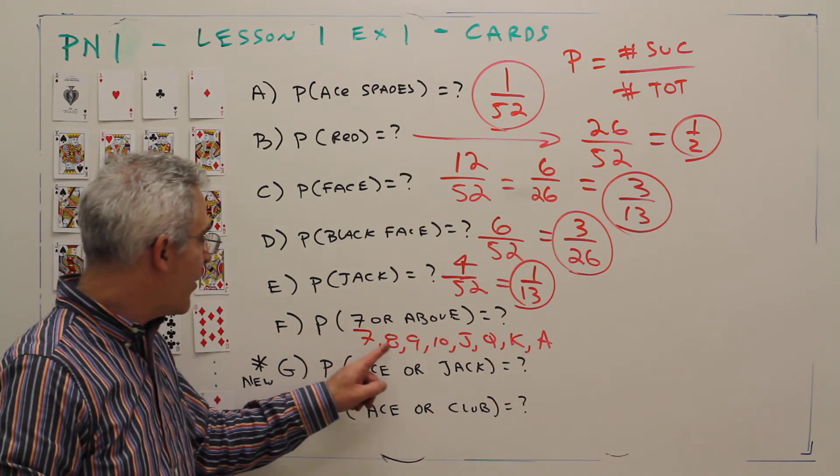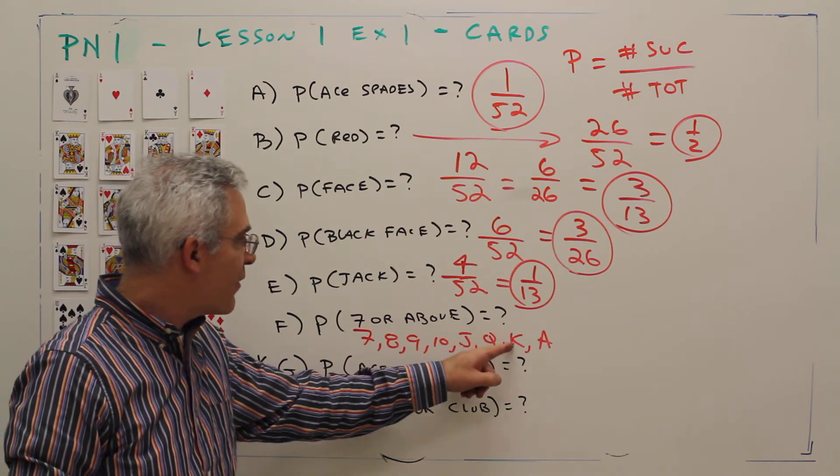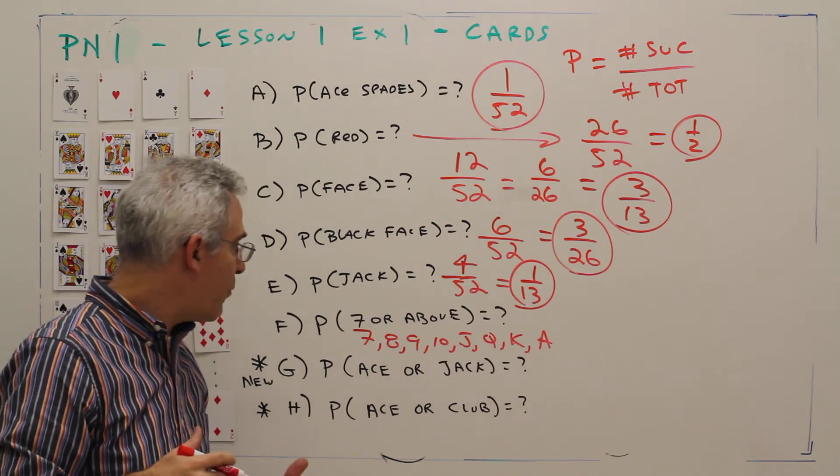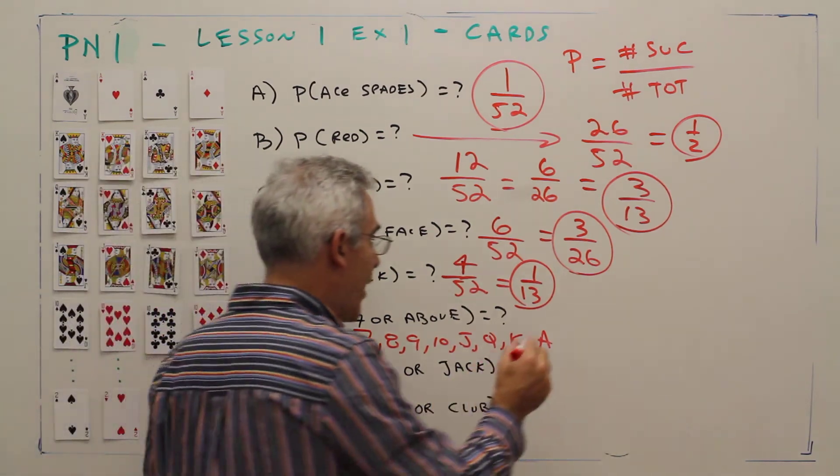So there's 1, 2, 3, 4, 5, 6, 7, 8 ranks. There's four cards in each rank, so that's 40 successful outcomes.